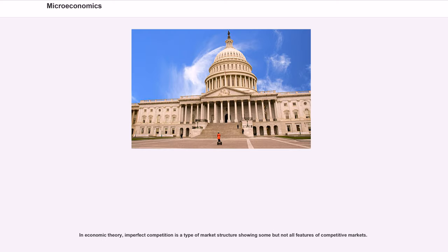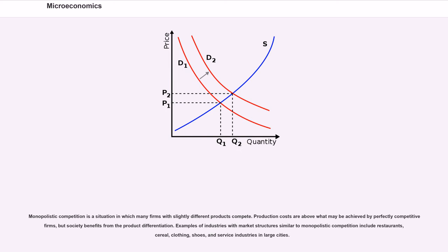In economic theory, imperfect competition is a type of market structure showing some but not all features of competitive markets. Monopolistic competition is a situation in which many firms with slightly different products compete. Production costs are above what may be achieved by perfectly competitive firms, but society benefits from the product differentiation.